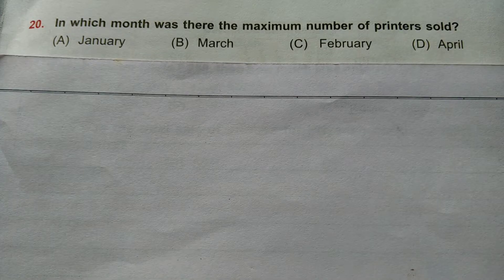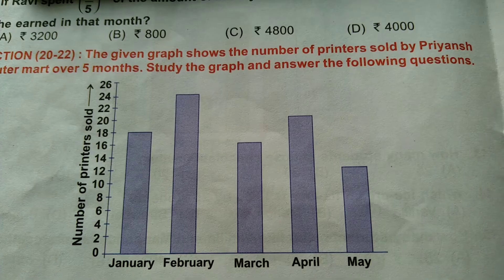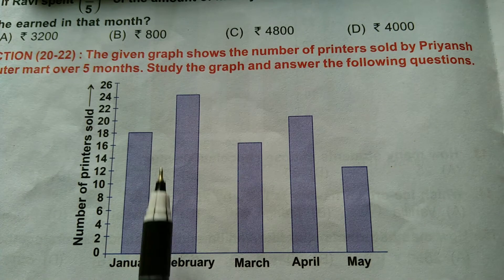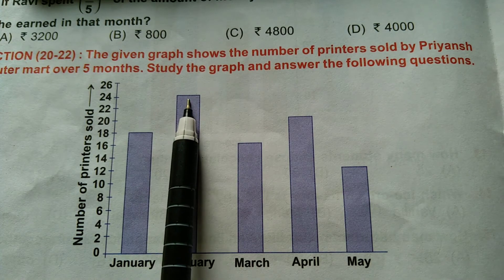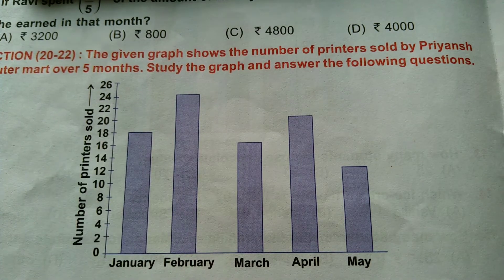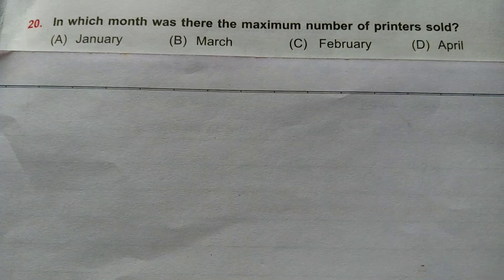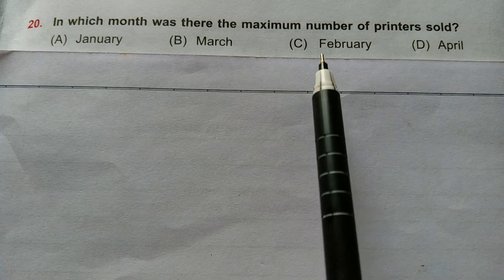Question number 20: In which month was there the maximum number of printers sold? In this bar graph, the height of the bar in month February is maximum, that is 24. It means the number of printers sold in February is 24, which is maximum. Hence, option C is correct — February.